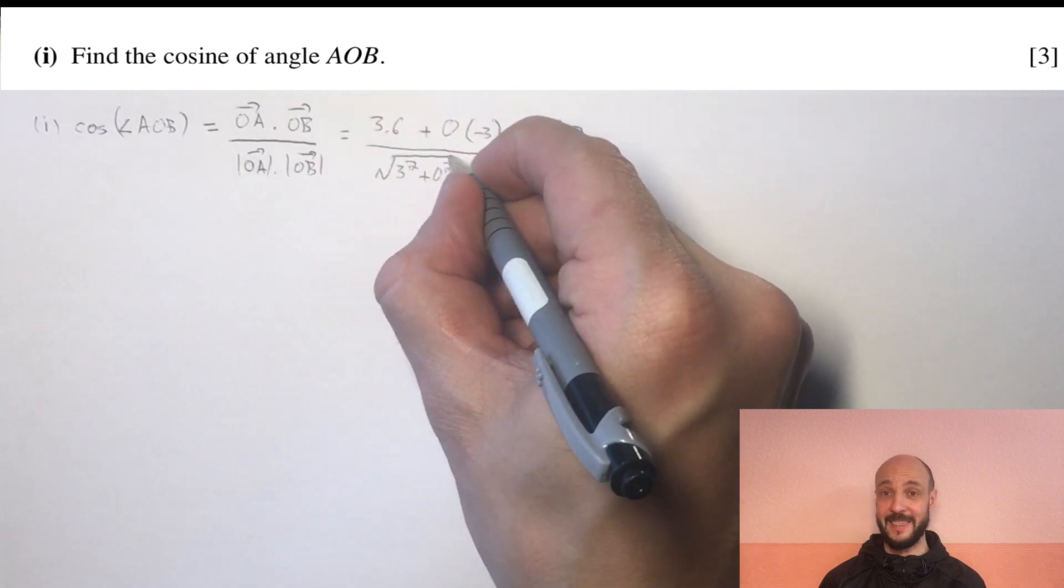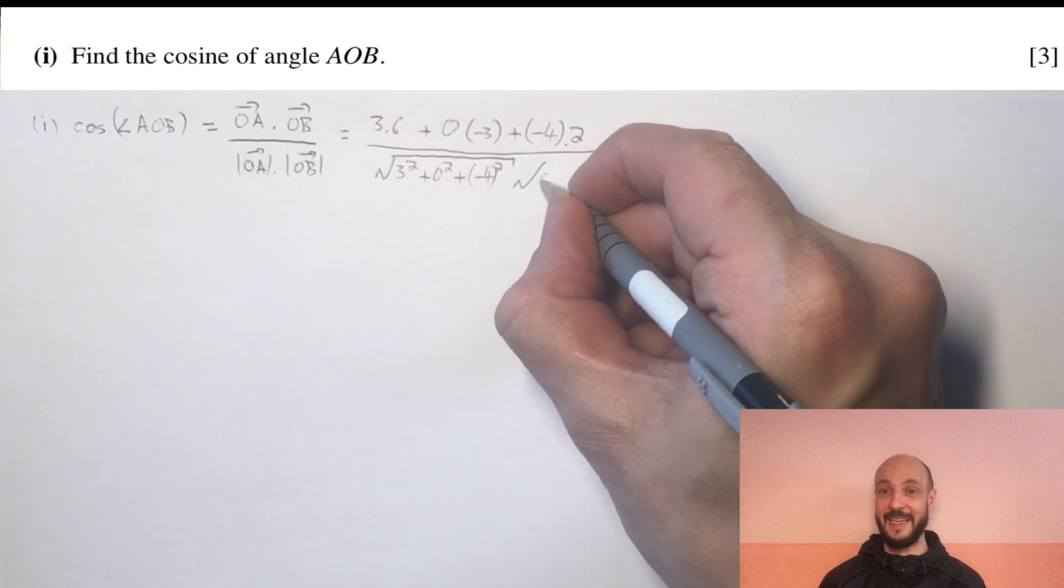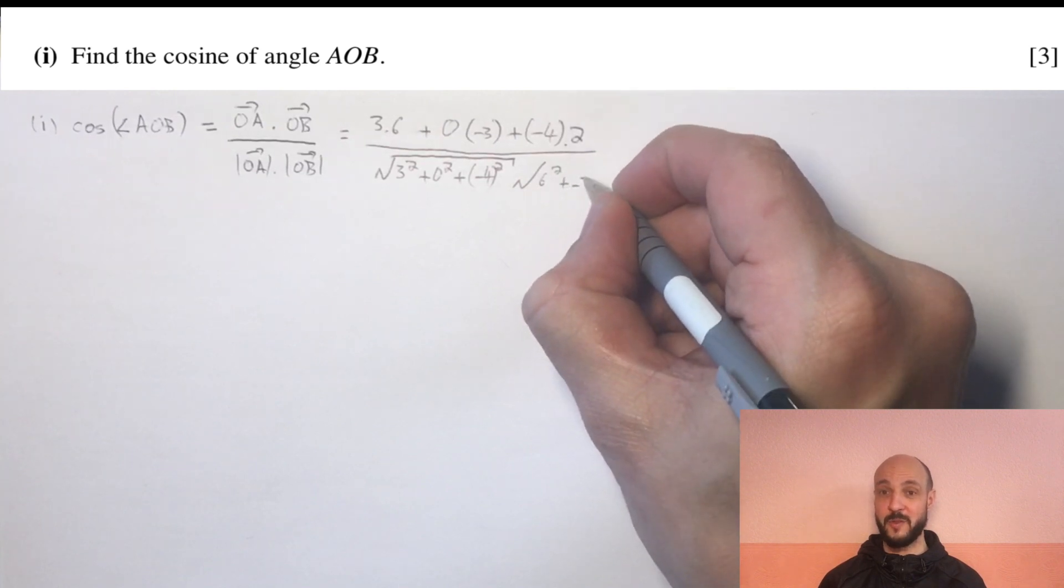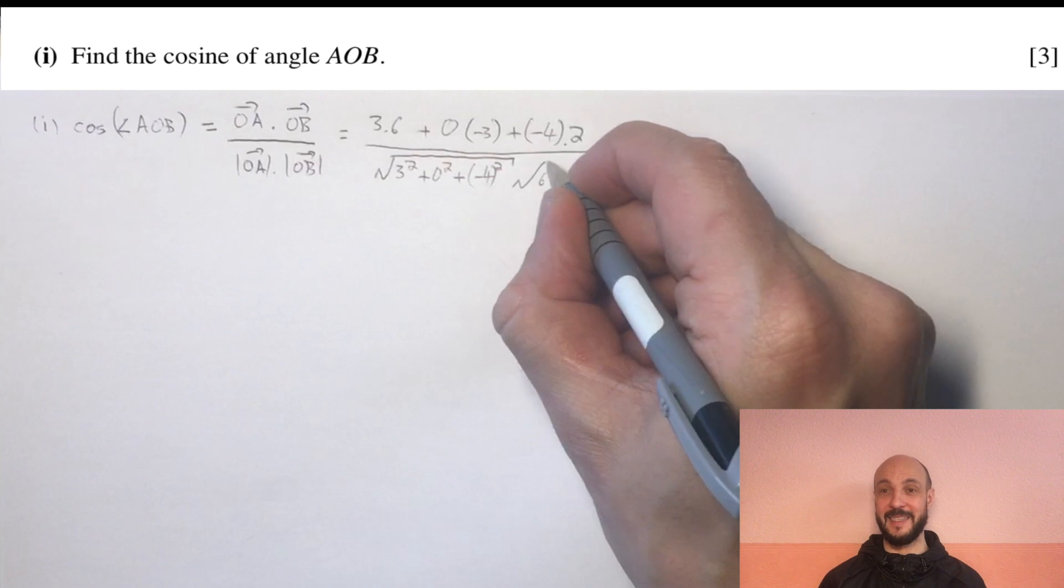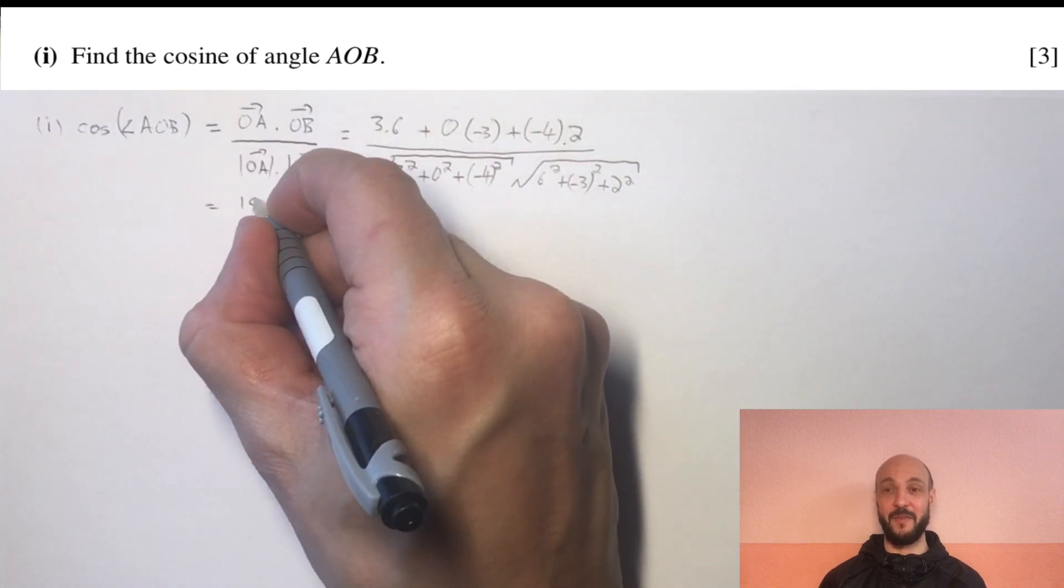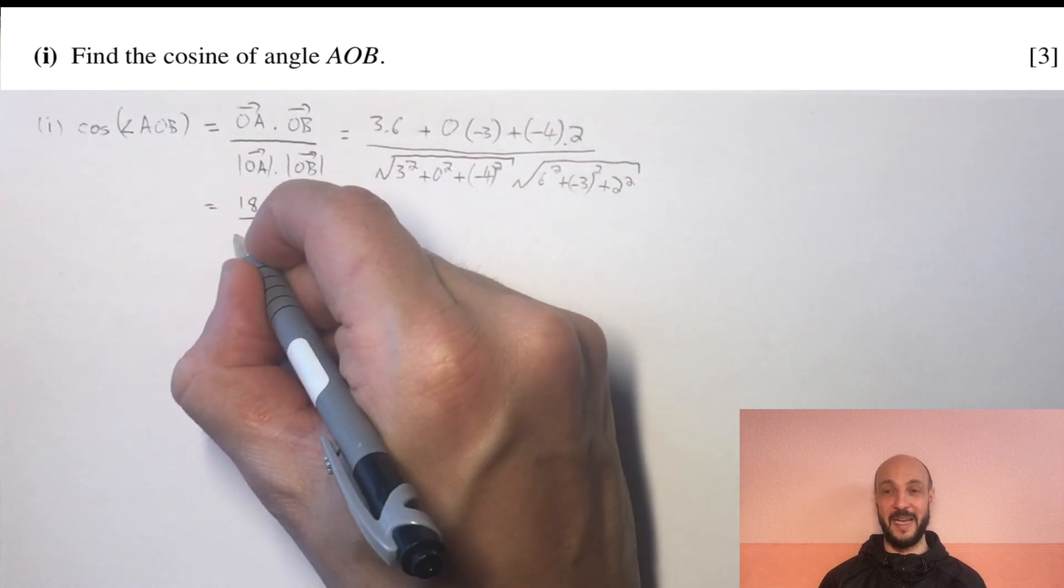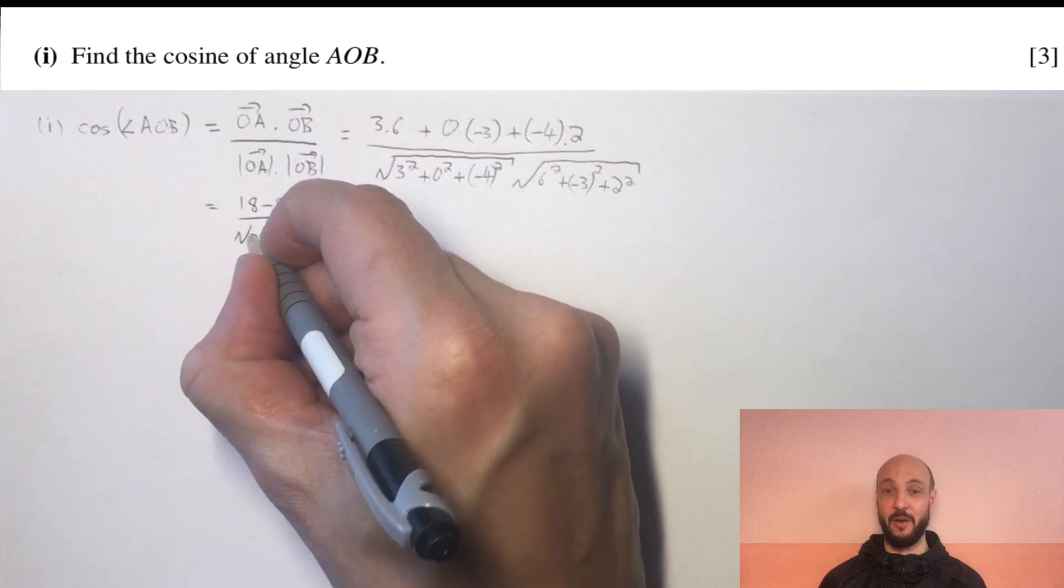On the top we've got 18 plus 0 minus 8 and on the bottom we've got root of 25 times root of 49. 18 minus 8 is 10 and the roots give us 5 times 7, so we've got 10 over 35 which is 2 over 7.